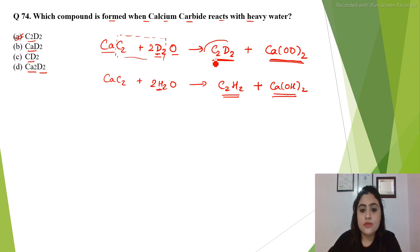So C2D2 is the compound which is formed when calcium carbide reacts with heavy water. The correct answer to this question is C2D2. I hope this has answered your question. Thank you.